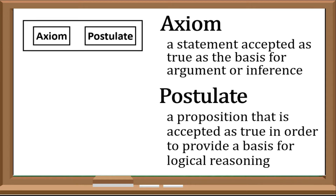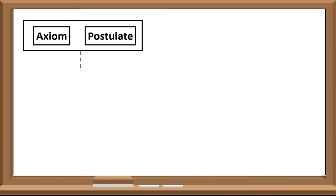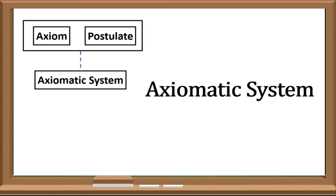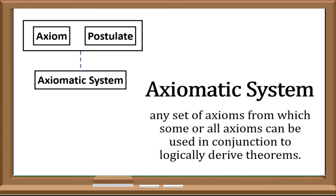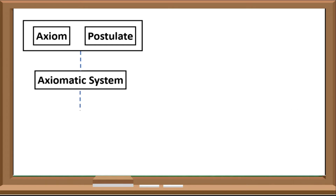Because of these axioms and postulates, we can create an axiomatic system. An axiomatic system is any set of axioms or postulates from which some or all axioms or postulates can be used in conjunction to logically derive theorems. Through the help of these axioms, we can create, formulate, or derive a theorem.